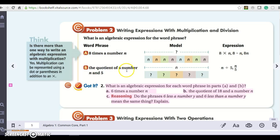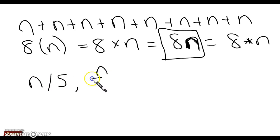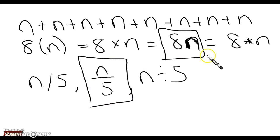Now we have the quotient of a number n and five. So if I have the quotient of a number n and five, that's just like saying n divided by five. I can write it as n divided by five in several ways, but what's the preferred way to write it in algebra? Here's the preferred way — n over five as a fraction.